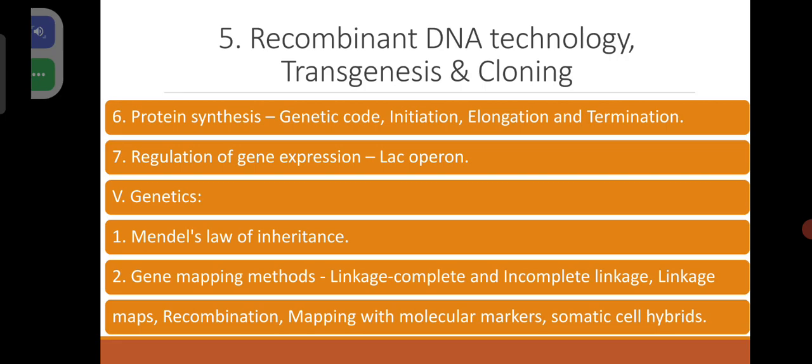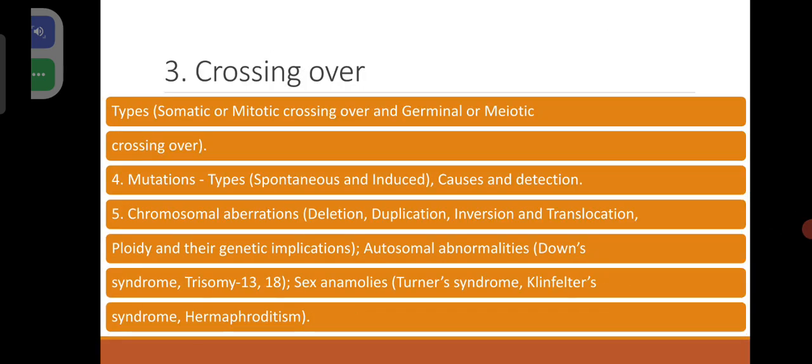Genetics: Mendel's laws of inheritance. Gene mapping methods. Linkage — complete and incomplete linkages, linkage maps. Recombination mapping with molecular markers. Somatic cell hybrids. Crossing over and its types: somatic or mitotic crossing over, and germinal or meiotic crossing over. Mutations: types — spontaneous and induced — causes and detection.